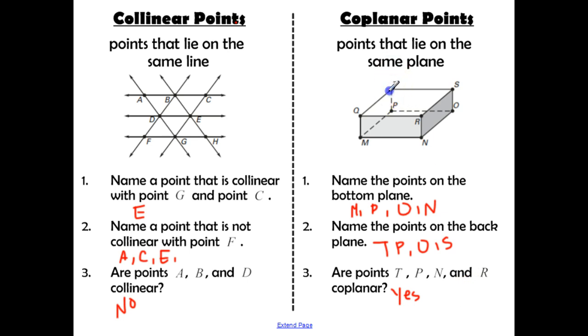And number three, are T, P, R, and N, are these four points coplanar? Now, your initial answer might have been no, because the planes that we talked about on this box, top, bottom, left, right, front, back, those four points are not on any of those planes together.